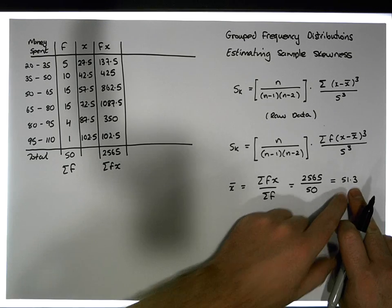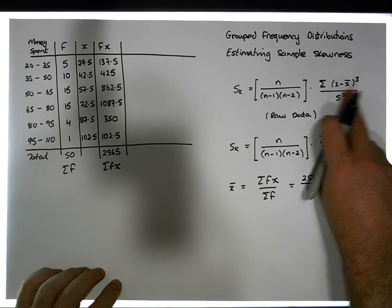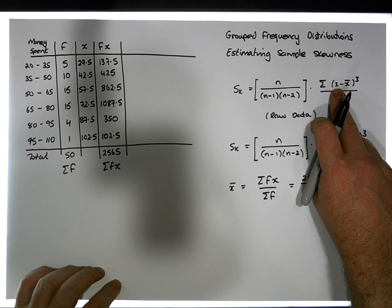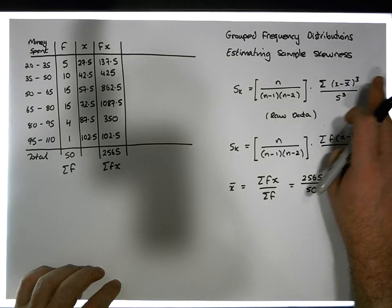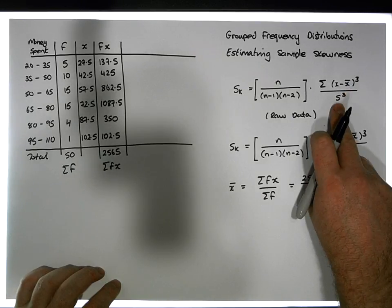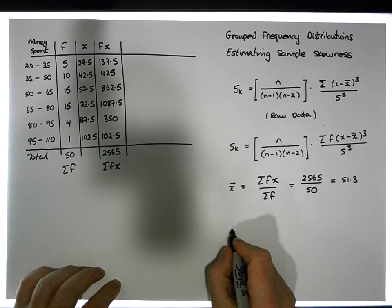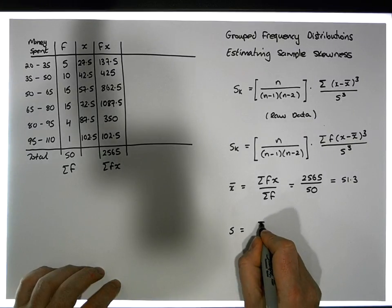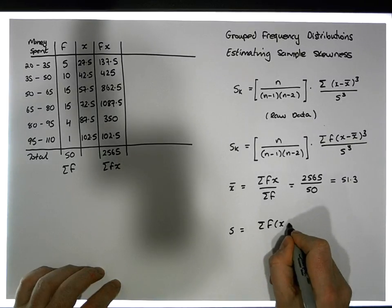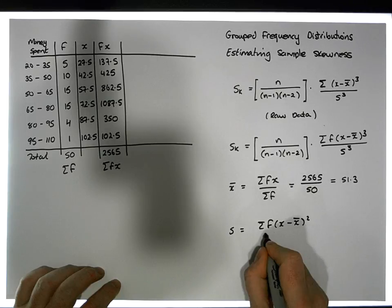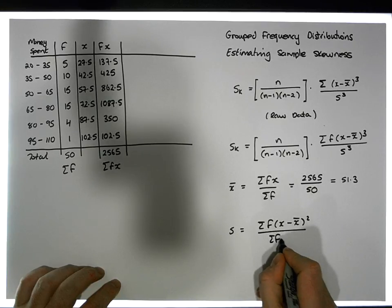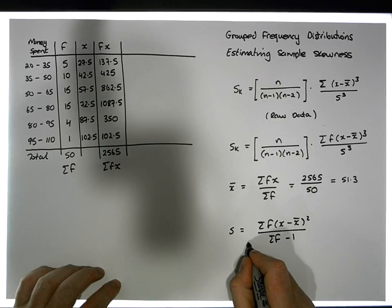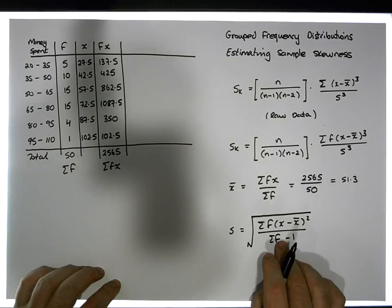Now that we have the sample mean, we can work on the distances x − x̄, then x − x̄ squared, and then cubed. We'll calculate the sample standard deviation: s = √(Σf·(x − x̄)² / (Σf − 1)). We need to calculate this before proceeding to the skewness statistic.